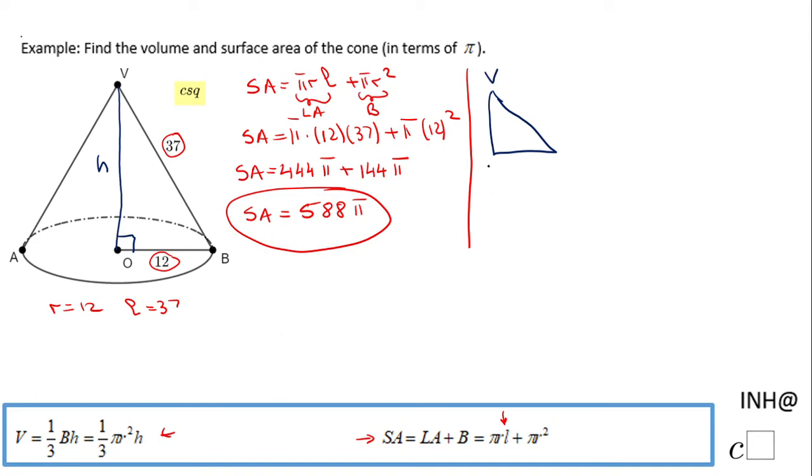So VOB is a right triangle and we know this is 12 and this is 37. 12 is one of the legs, 37 is the hypotenuse, we need to find the other leg. And for that reason I'm going to use the Pythagorean theorem: a² + b² = c². So we're going to have here x² + 12² = 37². So that will be x² + 12² is 144 and 37² is 1369.